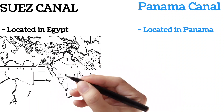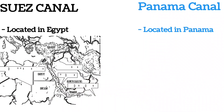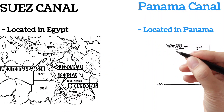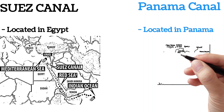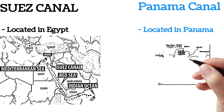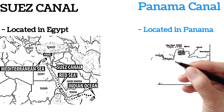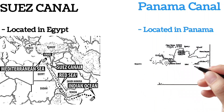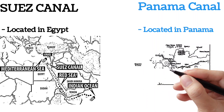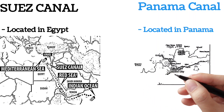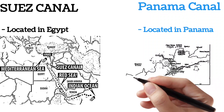The Suez Canal connects the Mediterranean Sea to the Red Sea, while the Panama Canal connects the Atlantic Ocean to the Pacific Ocean. The Suez Canal is 120 miles long, while the Panama Canal is about 50 miles long.